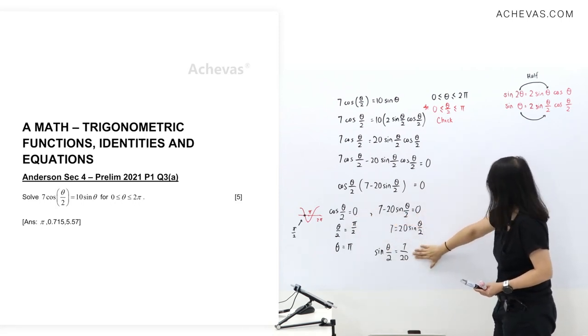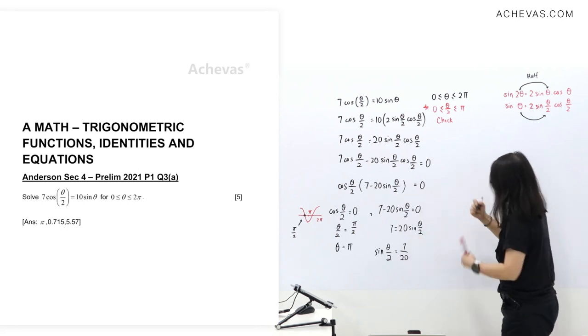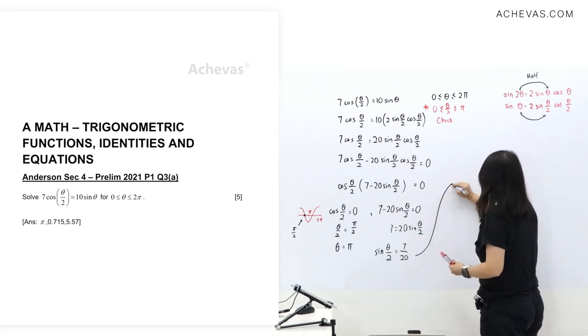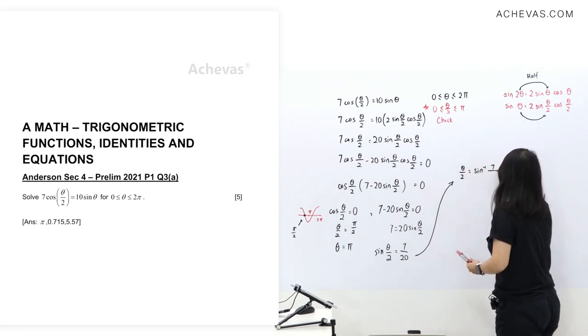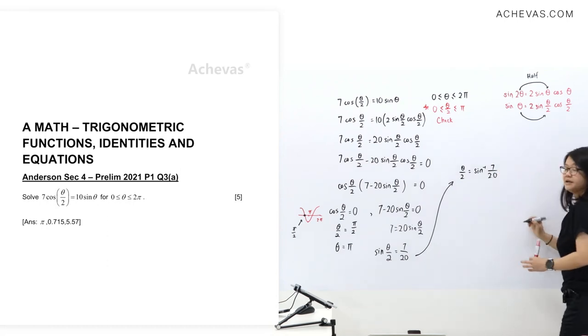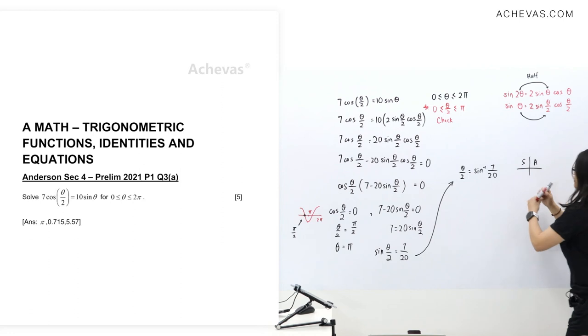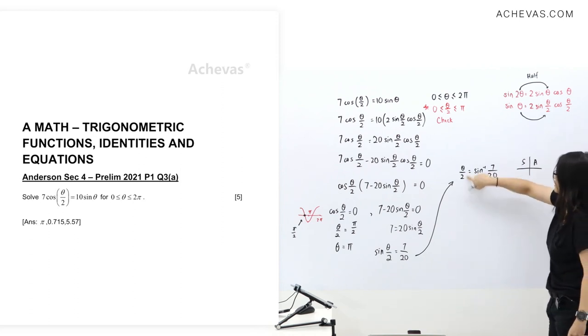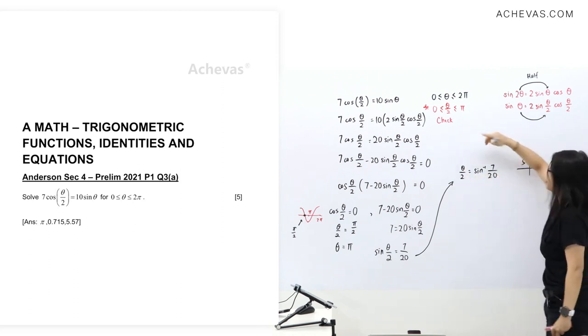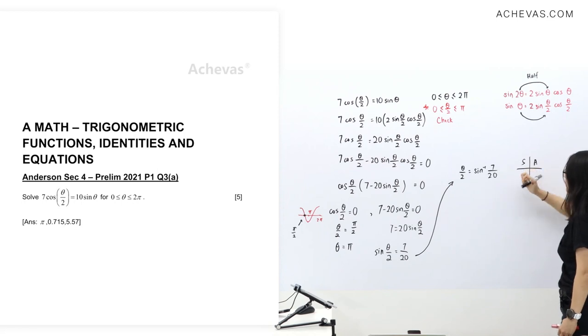Sine theta over 2 equals 7/20. I'm going to write it here. Theta over 2 equals sine inverse of 7/20. Now, let's take a look at our ASTC. Since I already write this one, I will reach until pi answer only. I do not want to take this two. Let's just do that.